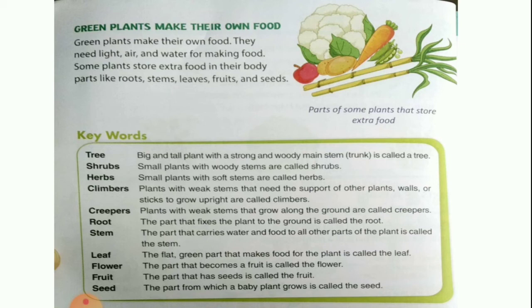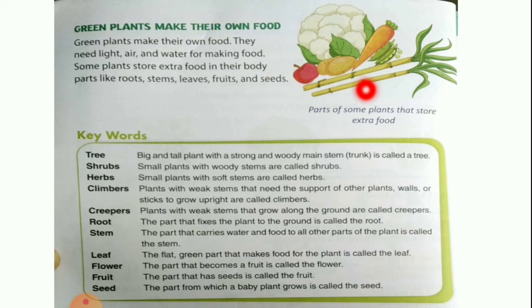Plants store food in their roots, stems, leaves, fruits and seeds. Many times we eat those parts too. Parts of some plants that store extra food — here you can see vegetables and fruits which are different parts of plants that we eat in our daily life.